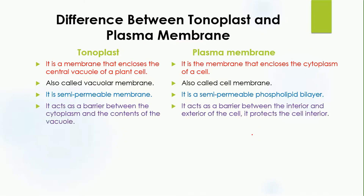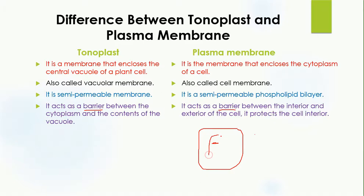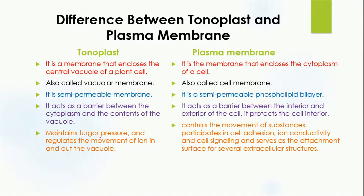Another difference is that the tonoplast acts as a barrier between the cytoplasm and the contents of the vacuole, while the plasma membrane acts as a barrier between the interior and the exterior of the cell, protecting the cell interior. Here you can see the cell membrane separating the outside from the inside, while the tonoplast protects the internal content of the vacuole.